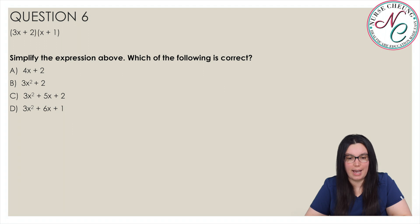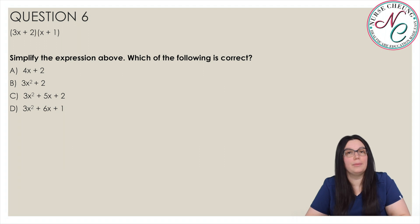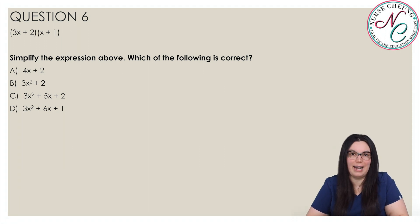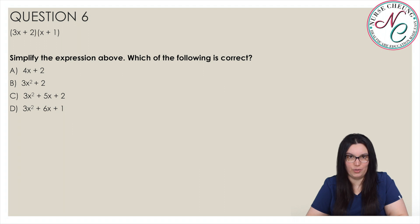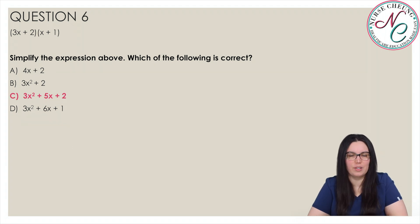Parentheses 3x plus 2 times parentheses x plus 1. Simplify the expression above — which of the following is correct? Is it A, 4x plus 2; B, 3x squared plus 2; C, 3x squared plus 5x plus 2; or D, 3x squared plus 6x plus 1? The correct answer is C, 3x squared plus 5x plus 2.